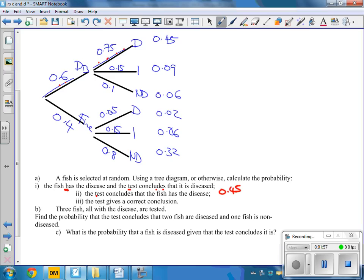Part two, the test concludes that the fish has the disease. Well, there's two possibilities. We could have been right or we could have actually made a mistake there. Put those two together and we're getting a 0.47.